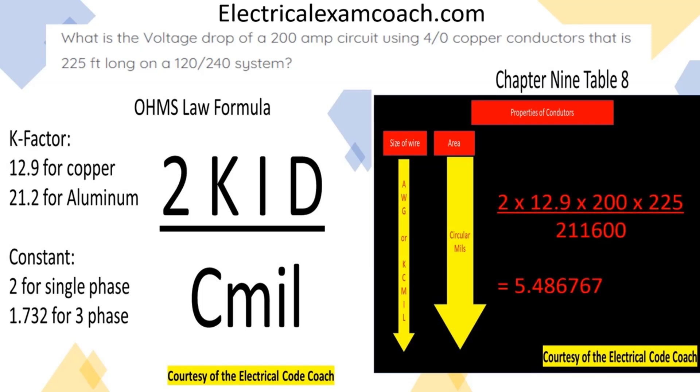After we work out all our math, and this is what I love about formulas. Just plug in what you know and then spit out the answer. 2 multiplied by 12.9 multiplied by 200 multiplied by 225 divided by the circular mills of a 4-aught copper conductor.